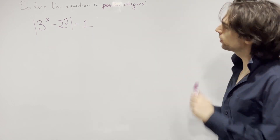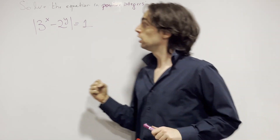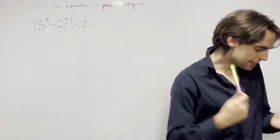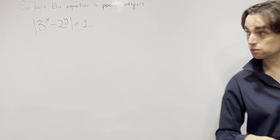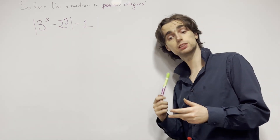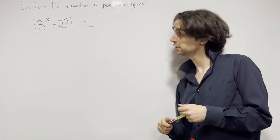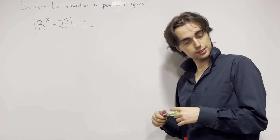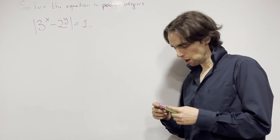This is called number theory. So how are we going to do this? 3 to the x minus 2 to the y, in absolute value, is 1. Solve it in positive integers. It's an interesting problem.